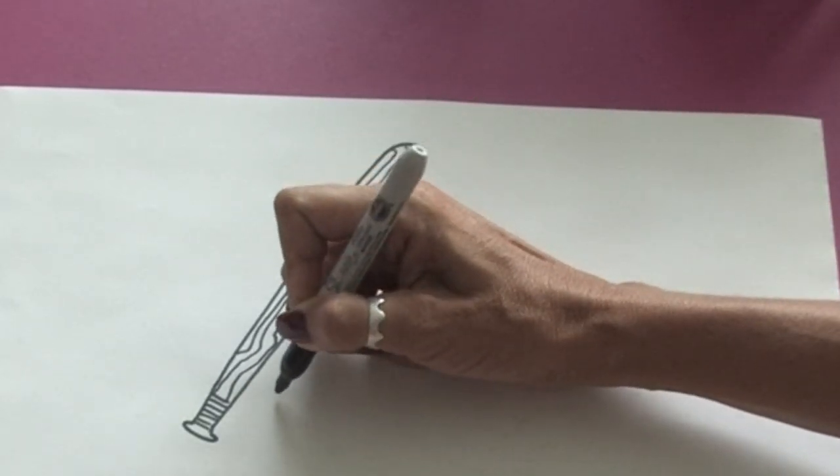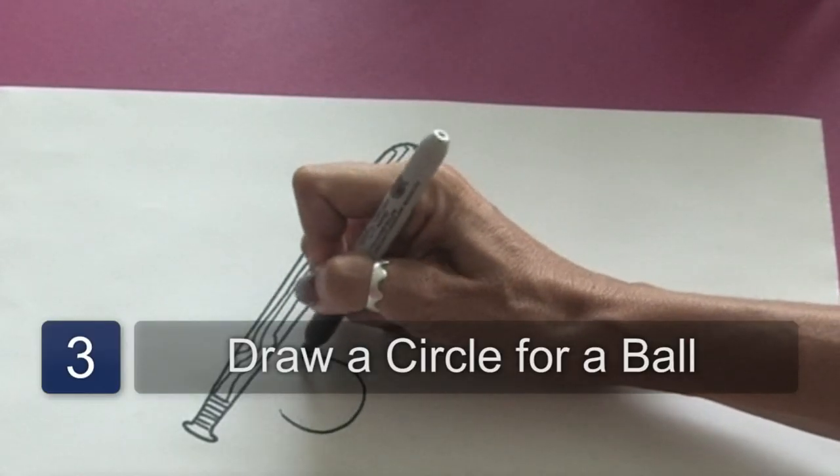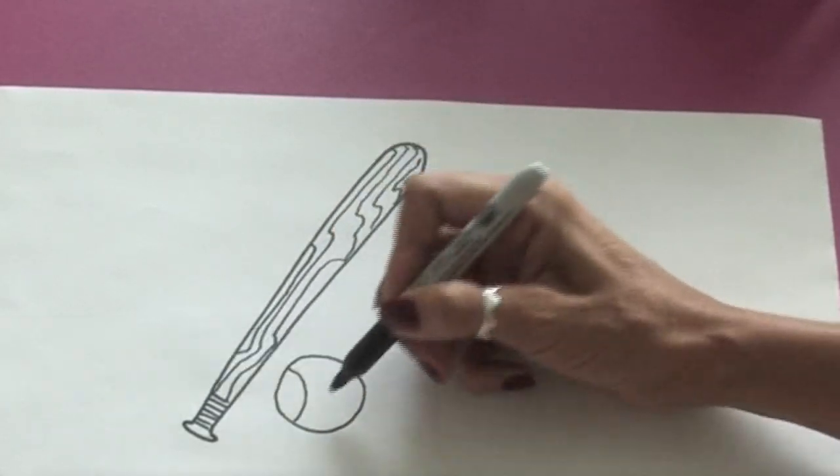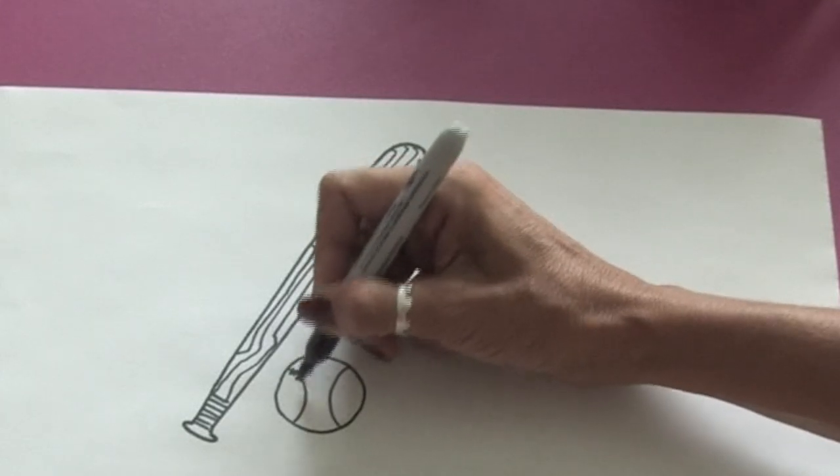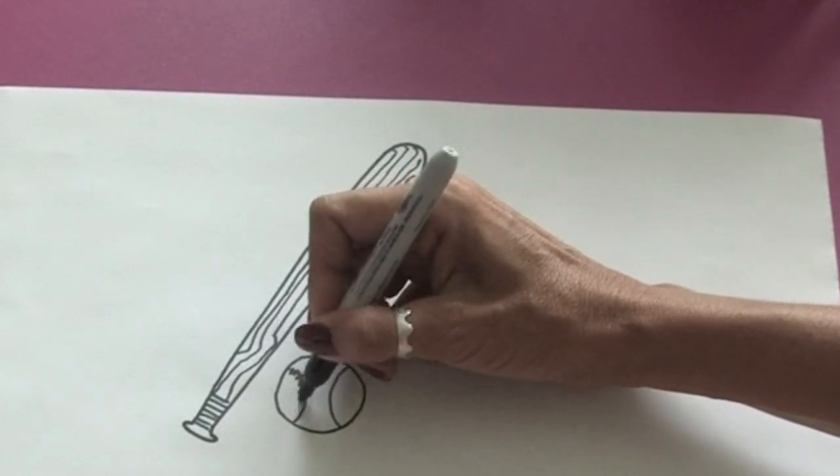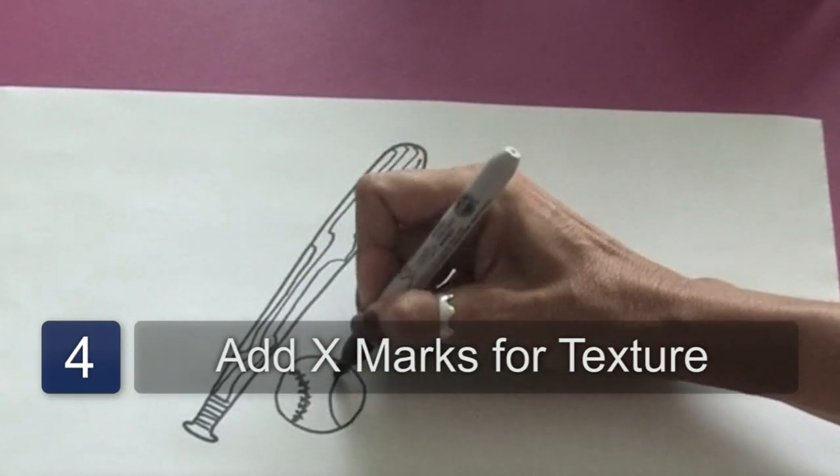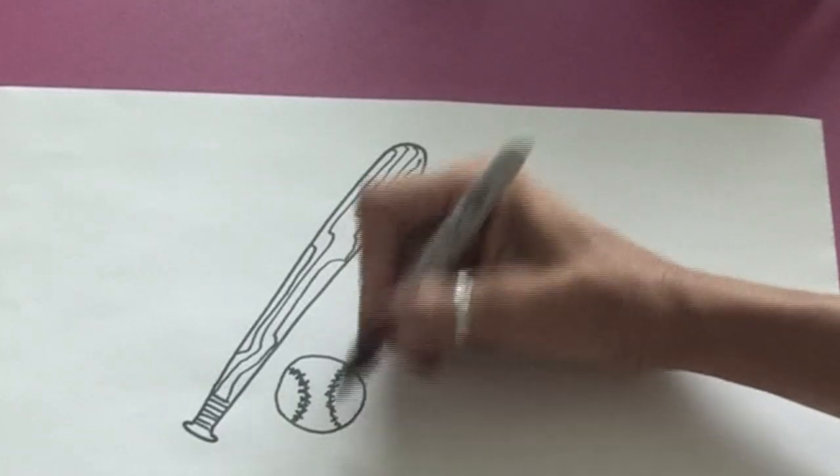Now, with the bat, of course, you need a ball. And that is very simple. You draw a little circle just like this. And then we'll draw on the little lines for the baseball. And if you want to add a little bit more detail, all you have to do is a series of X's. And you see how easy that is? And you just get the little bit of detail for the ball.